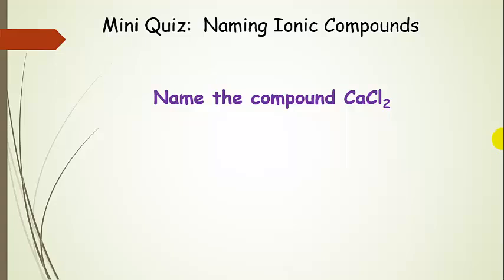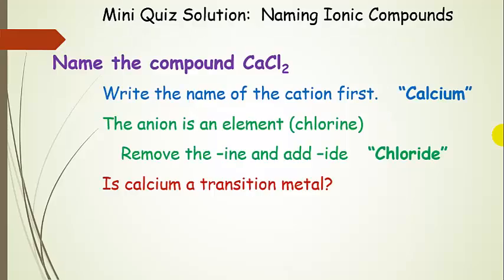The best way to do this is to just practice. We're going to name the compound formed from calcium and chlorine. Let's start by identifying our cation. Calcium is a main group element — calcium 2+. So we're going to write the name of the cation first, which is calcium.